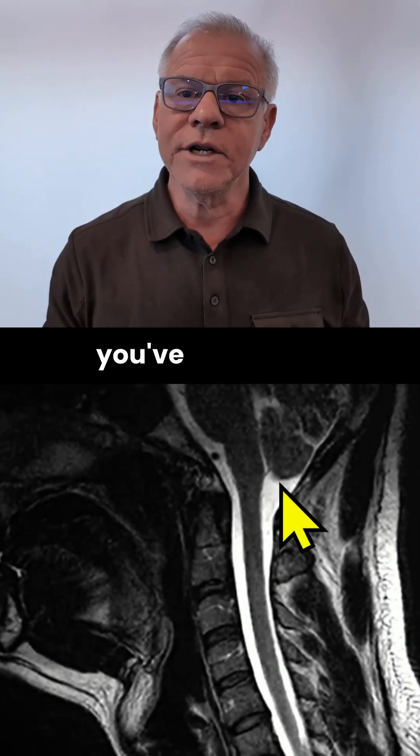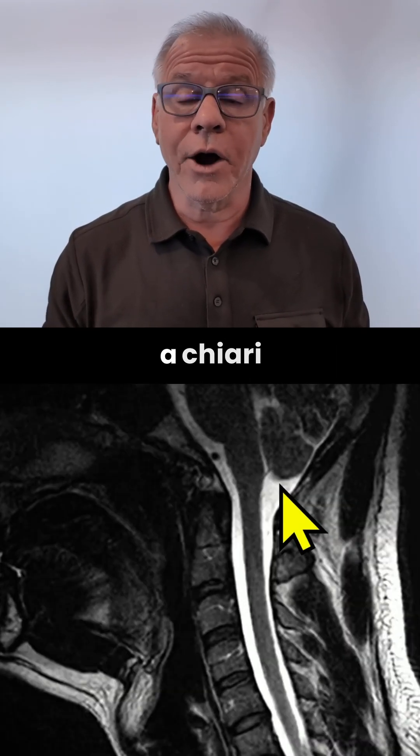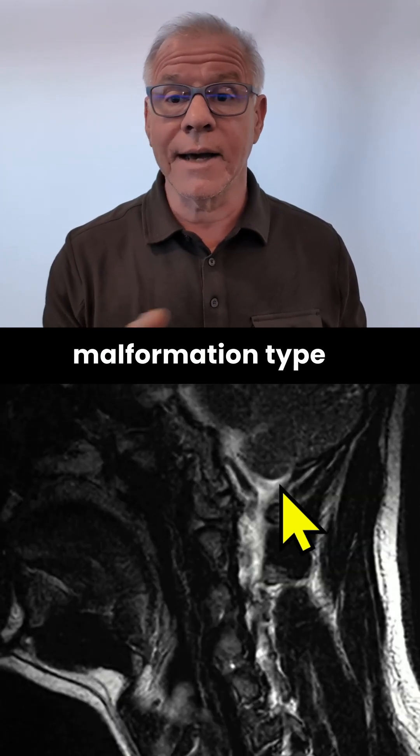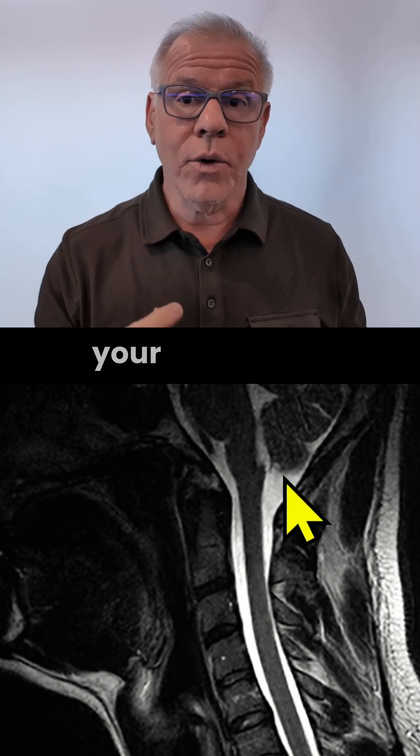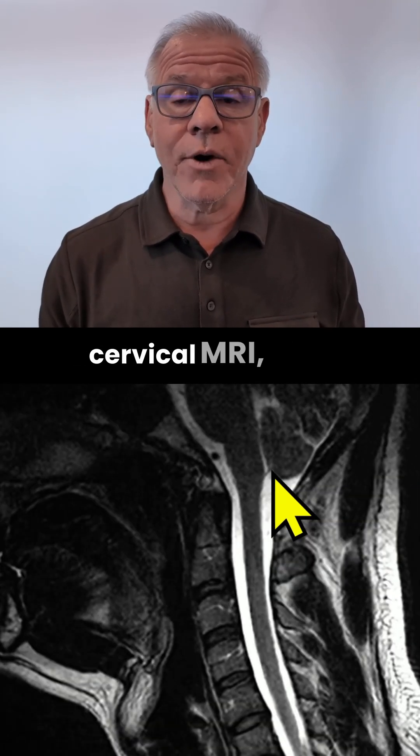Hi, Starks and Tenno, and if you've just found out that you've got a Chiari malformation type 0 CTE or type 1 on your MRI, either brain MRI or cervical MRI,